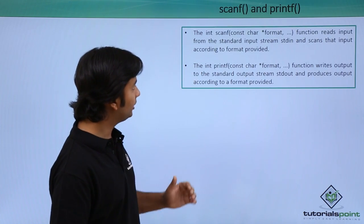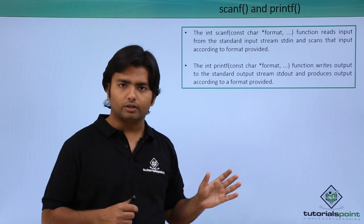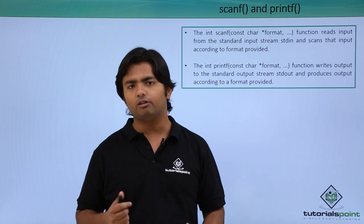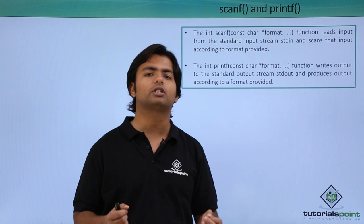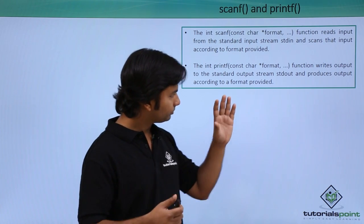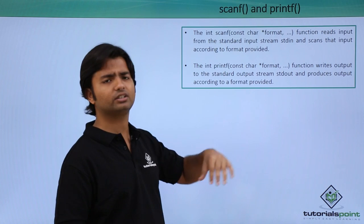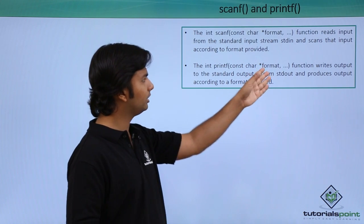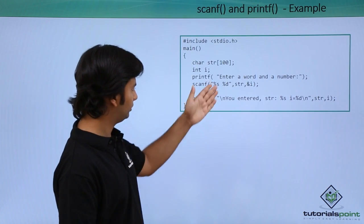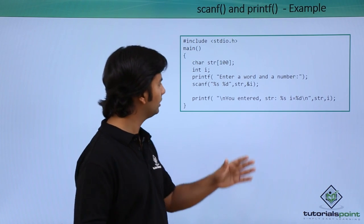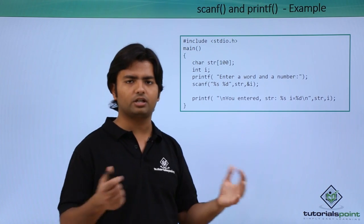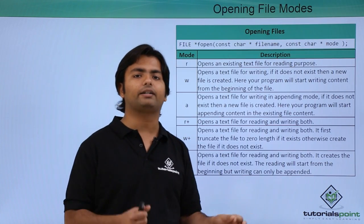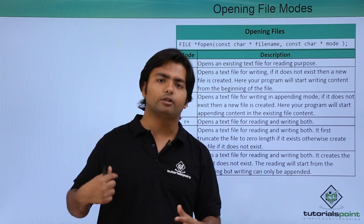The next method is scanf and printf, which we were already working with. These are used for formatted input and output — every time we work with scanf or printf we use format specifiers. scanf takes data from the user via stdin and printf sends it to stdout. We have already worked with this, so it won't be new. We will still see one program covering these methods before moving on.